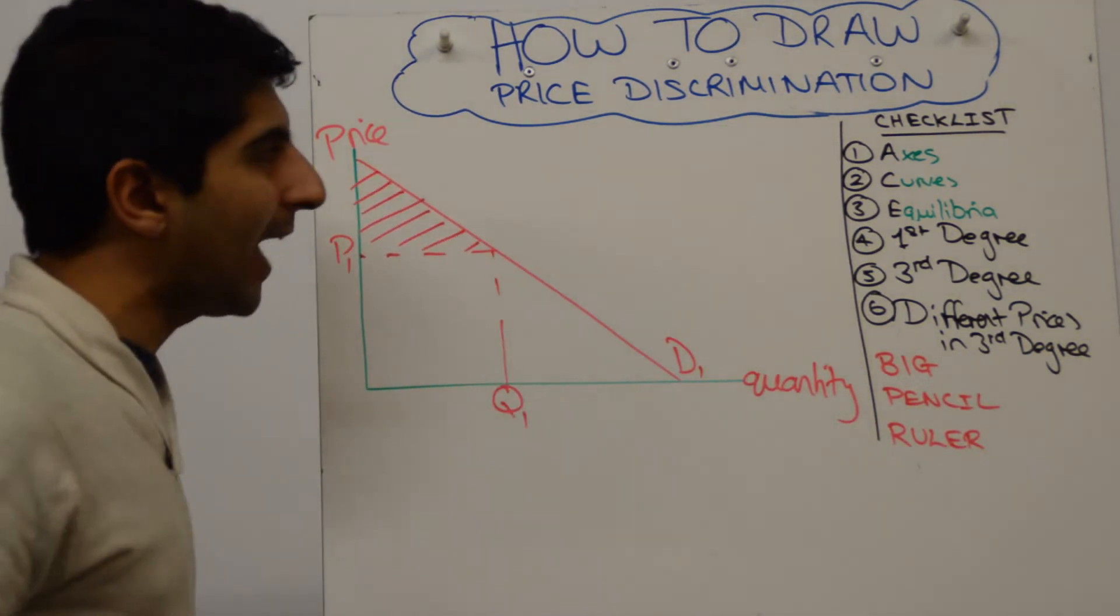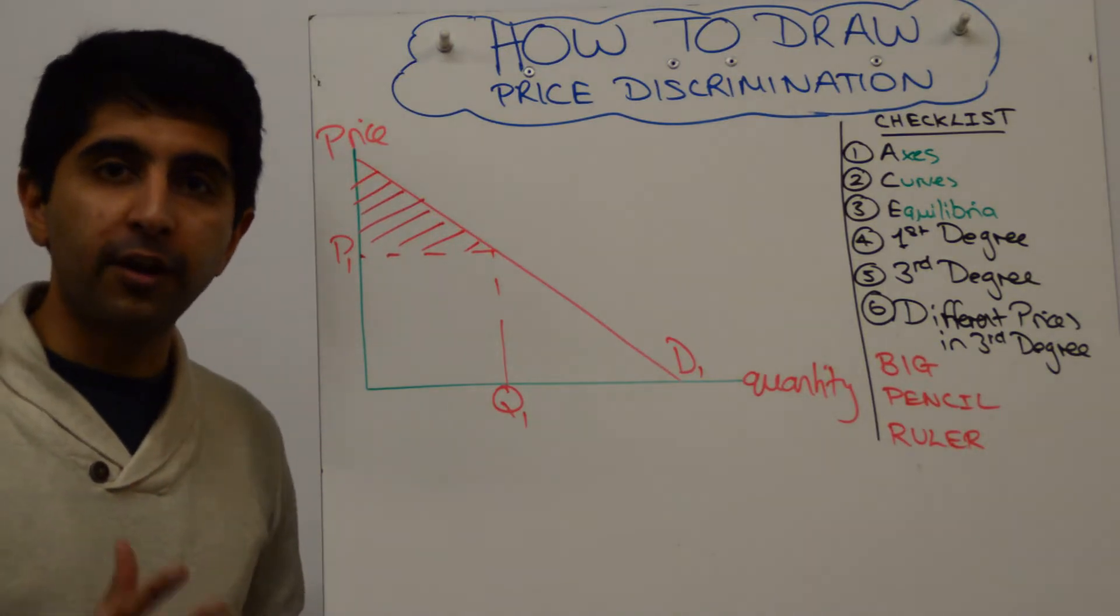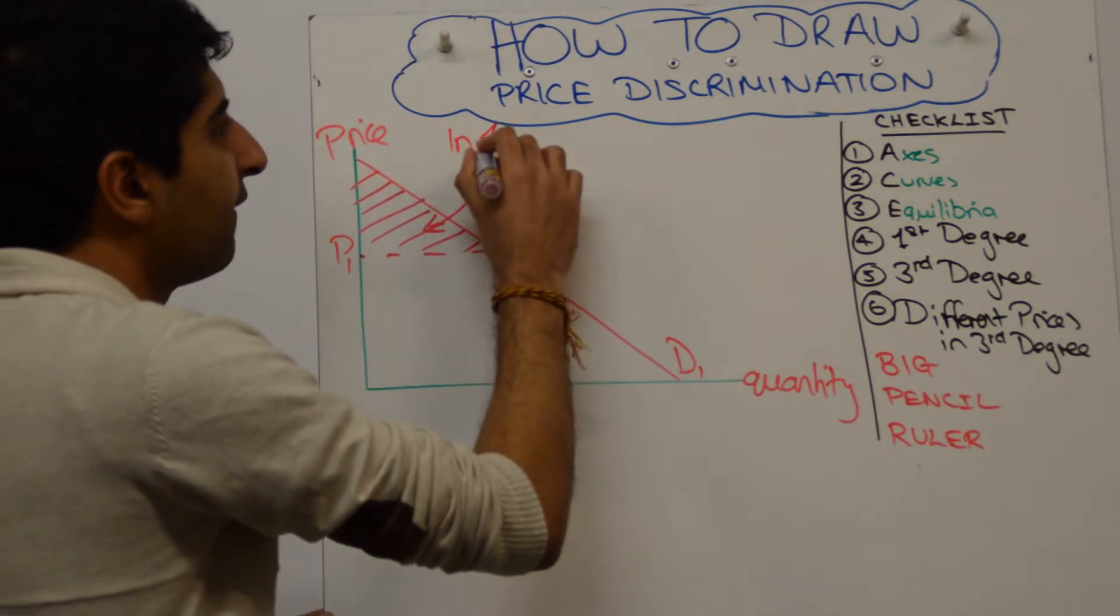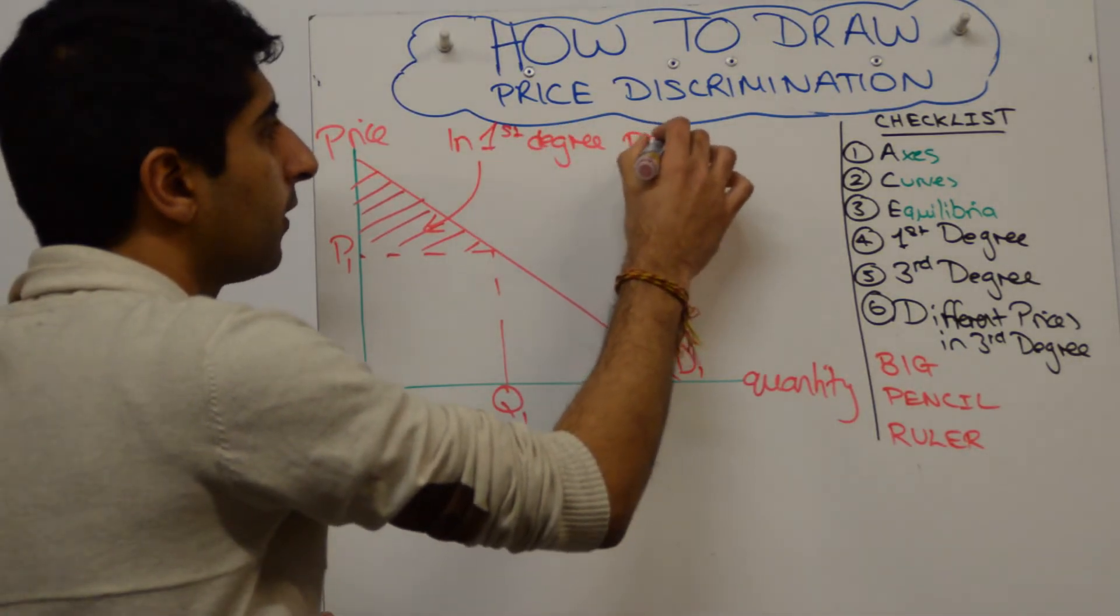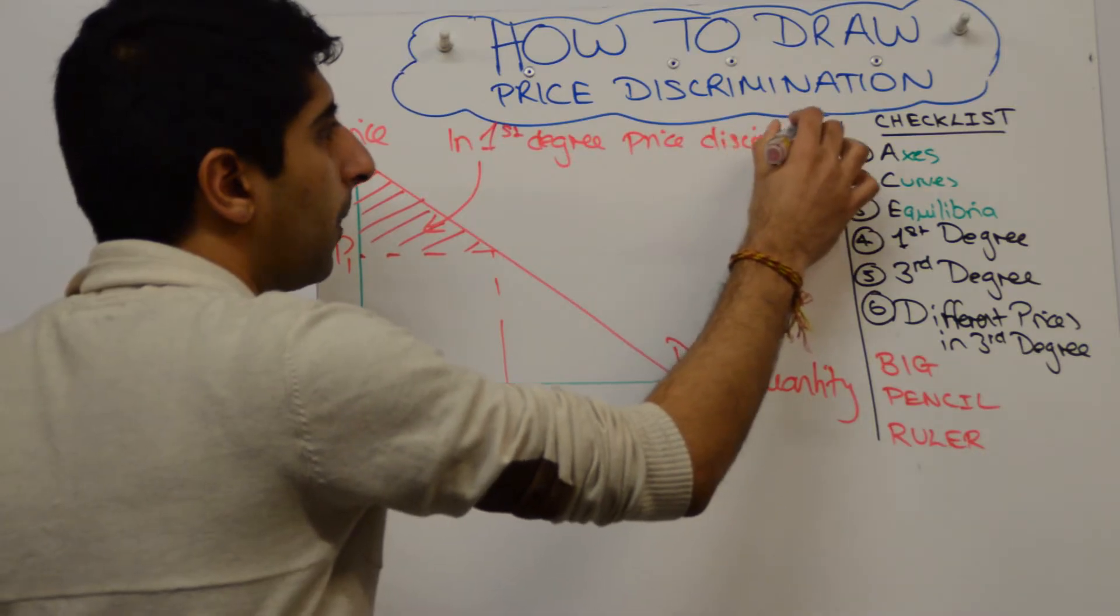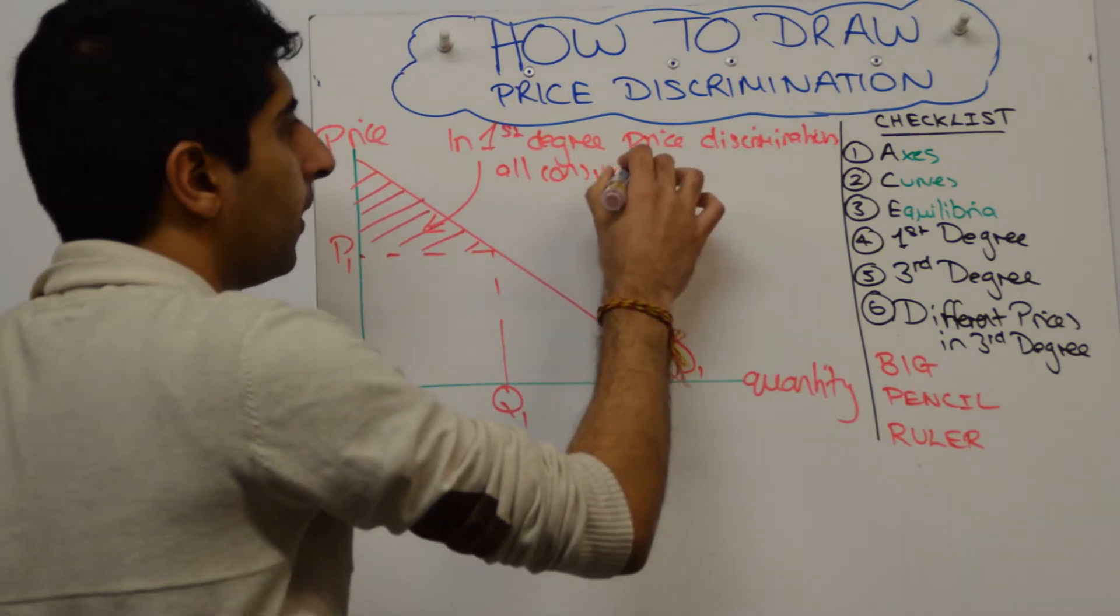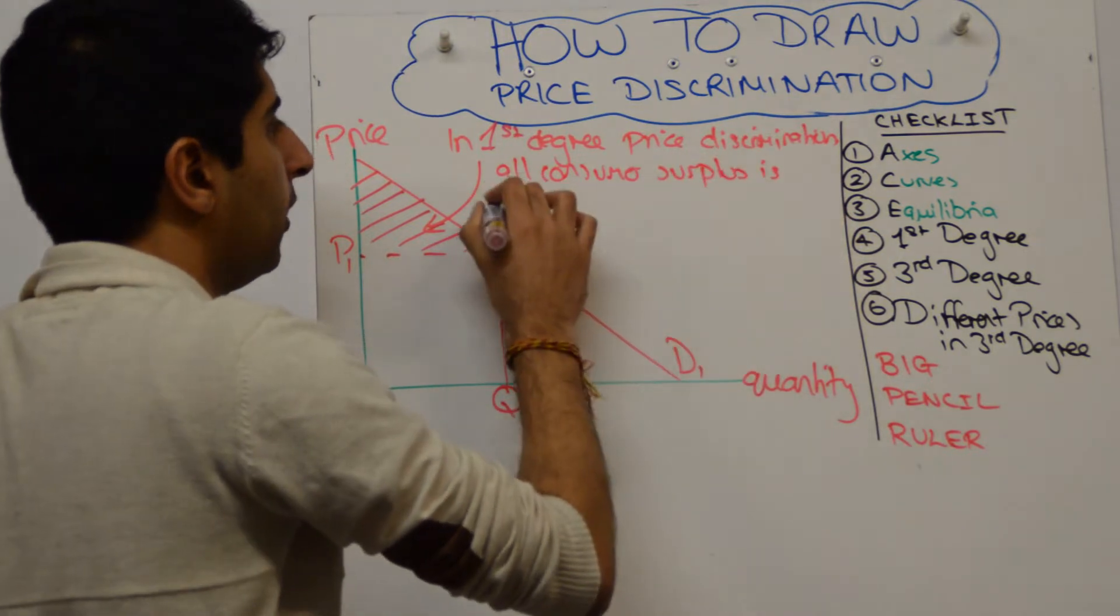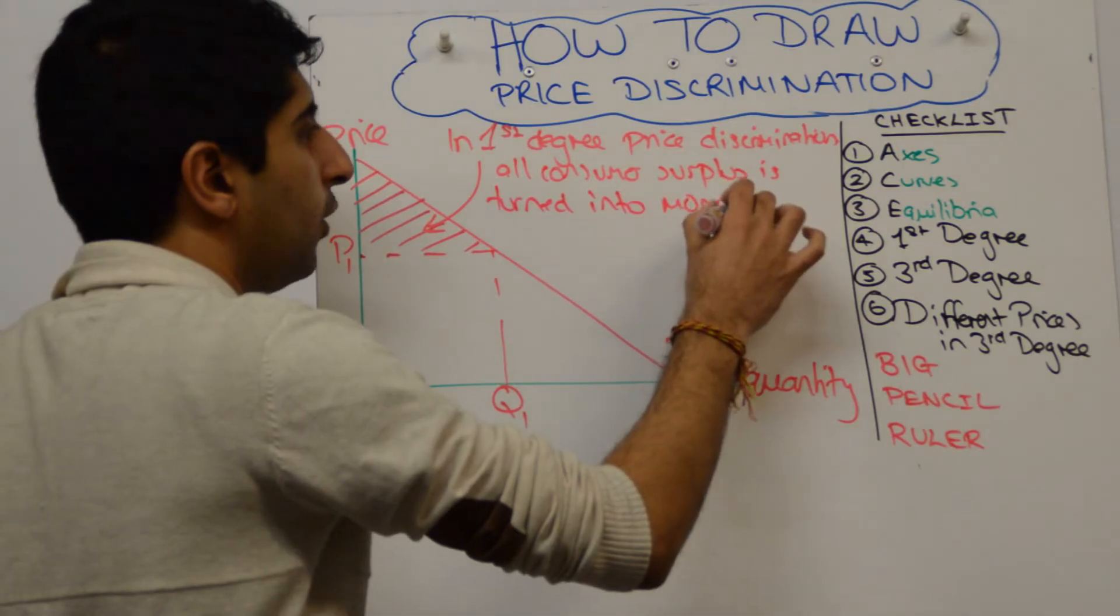But the difference now is that in first degree price discrimination, all of that consumer surplus will be turned into monopoly profit. So what you need to do is label that and say in first degree price discrimination, all consumer surplus is turned into monopoly profit.